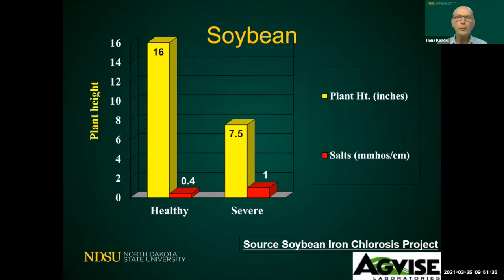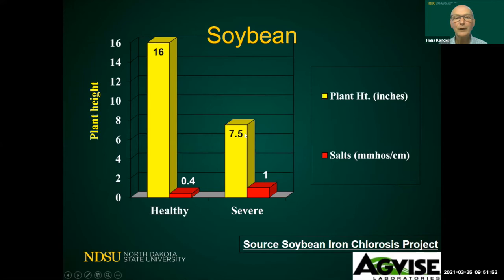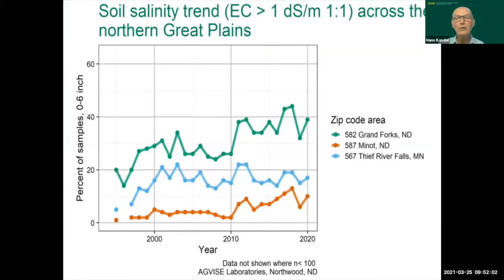Here's a soybean plant with low salinity of 0.4 — plant height is 16 inches. When we have one millimole salinity, the plant is less than half in size and also less in productivity. In our region, the number of samples coming in with elevated salinity has been increasing since the late 1990s. Looking at Grand Forks, the trend line shows we've gone from 20% of samples to about 40% of samples having higher levels than that critical threshold of one.